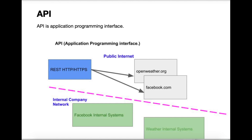Look at this diagram. We have the public internet — that's you sitting in your house, in Starbucks, working on your cell phone, or writing a computer program to talk to Facebook or OpenWeather. OpenWeather lets you get the forecast, and Facebook provides an API so you can update your Facebook page — you being a programmer or another company allowed by Facebook to put data on their website, like some advertising companies.